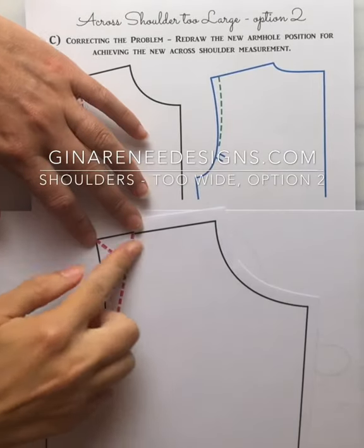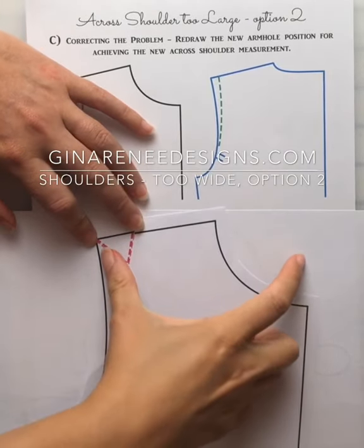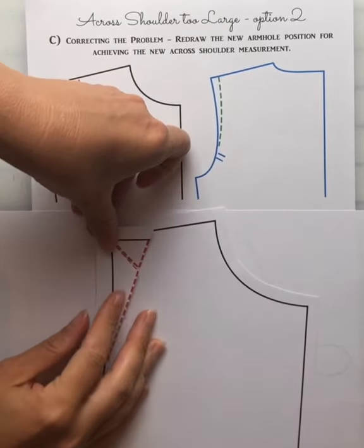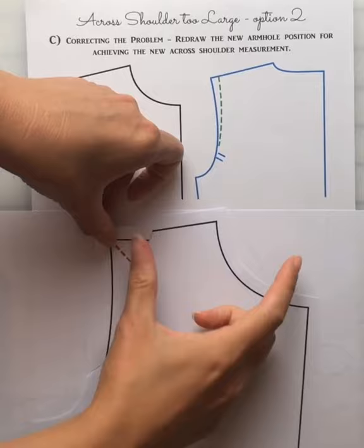So in the last video we talked about wide shoulders and this was the correction I showed you how to slash it shut, reduce that shoulder width.